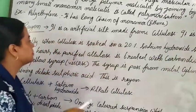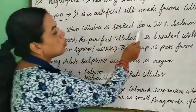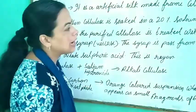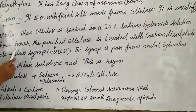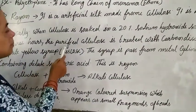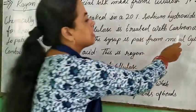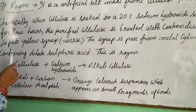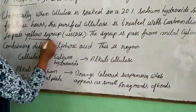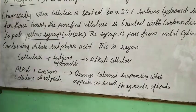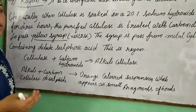Rayon is modified chemically. When cellulose is soaked in a 20% sodium hydroxide solution for 3 hours, the purified cellulose is treated with carbon disulfide to form a pale yellow syrup. This yellow syrup is very important.